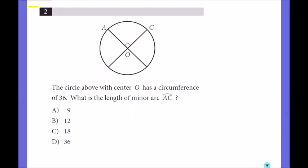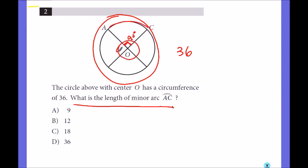The circle above with center O has a circumference of 36. What is the length of minor arc AC which is 90 degrees, which is one fourth? So you just got to divide by 4 because 90 is one fourth of 360, so it is 9. 36 divided by 4 is 9.